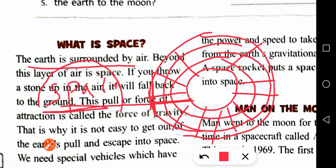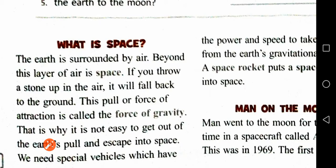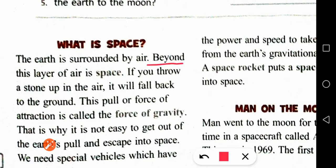Is it clear? When you are inside the atmosphere, you are not in space. When you cross the atmosphere, you are in space. The Earth is surrounded by air, and beyond the layer of air is space. If you cross this layer, you will find space.